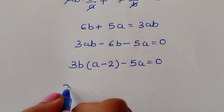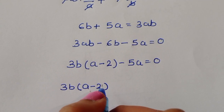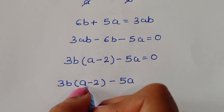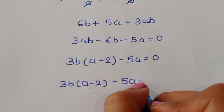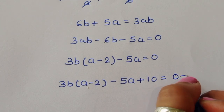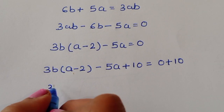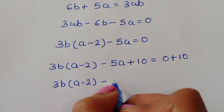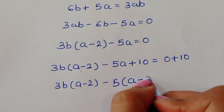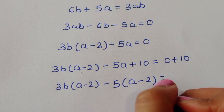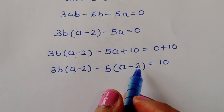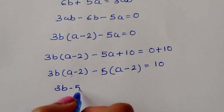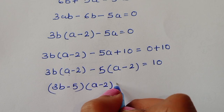We need to convert −5a into an expression involving (a − 2). Adding 10 to both sides: 3b(a − 2) − 5a + 10 = 10. Taking −5 common from −5a + 10 gives −5(a − 2). So we get (3b − 5)(a − 2) = 10.